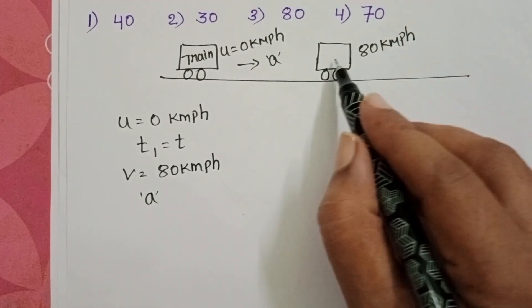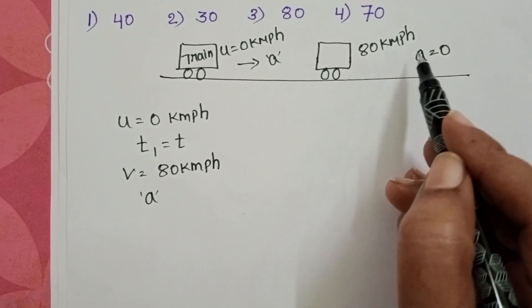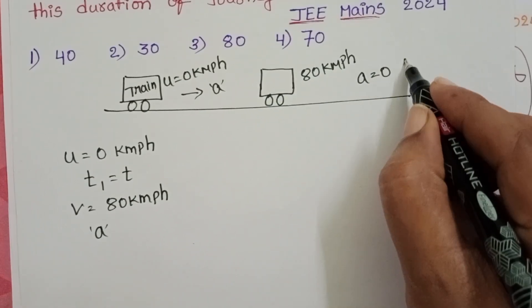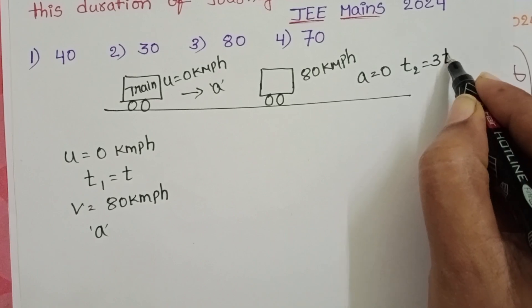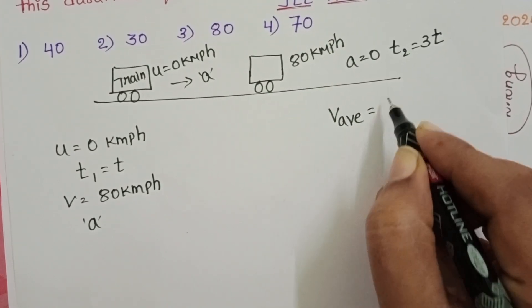After then acceleration of the train is 0. It is moving with constant speed only up to the time 3t. By using this information, we have to find out the average speed of the train.